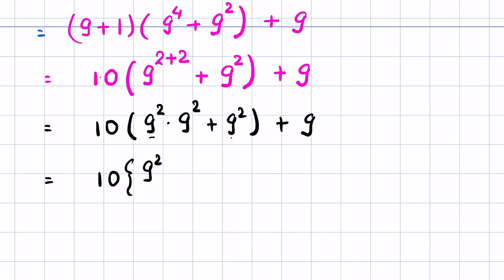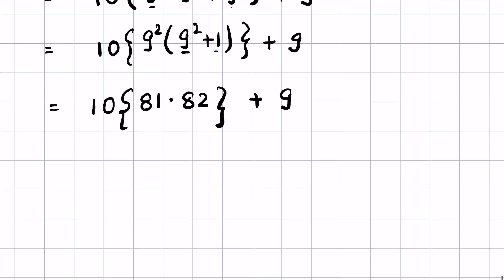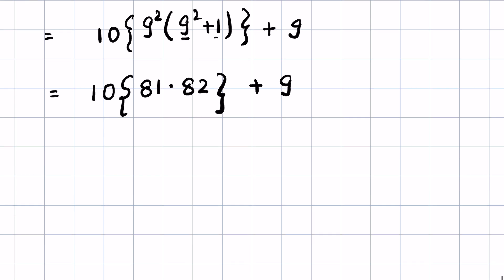So 10 times bracket 9² times (9² + 1) bracket close plus 9. Now 9² is 81, and 9² + 1 is 81 + 1 = 82. So this becomes 10 times 81 times 82 plus 9. Again you can multiply 81 times 82 directly, or we can use some algebra to make it more fun.